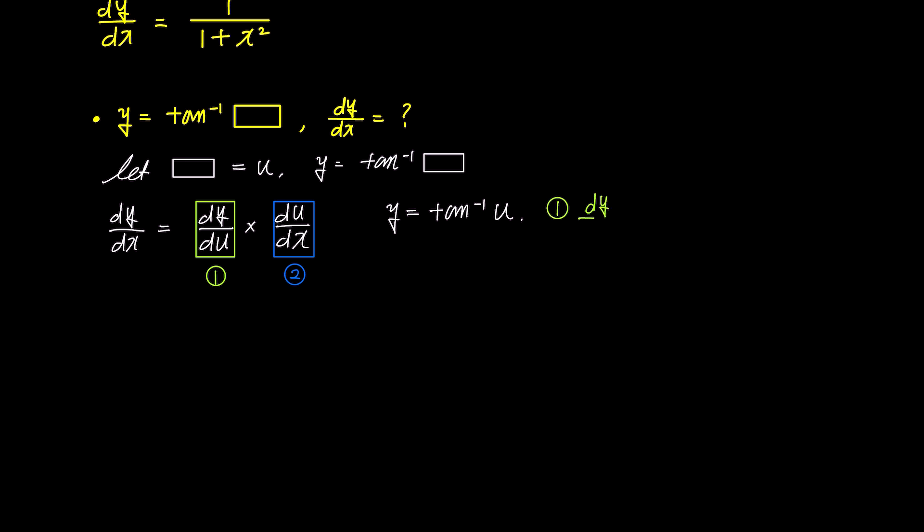And for 1, the derivative dy by du is found to be 1 over 1 plus u squared, which becomes 1 over 1 plus box squared after substituting u back with box.